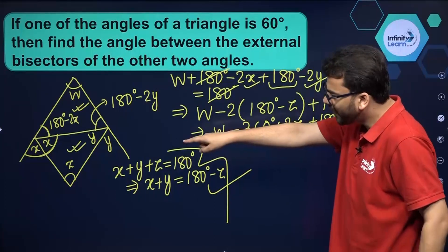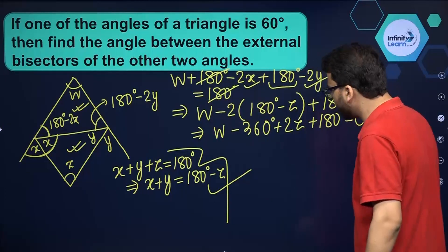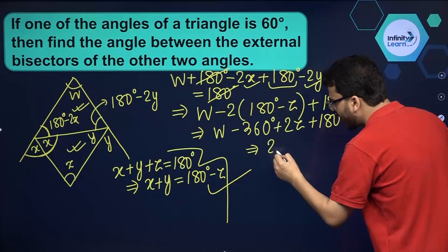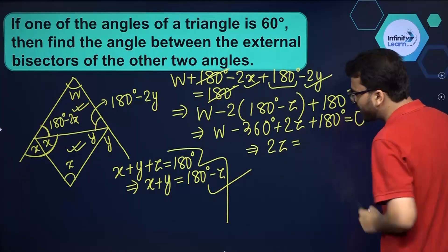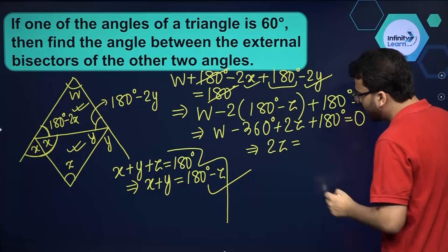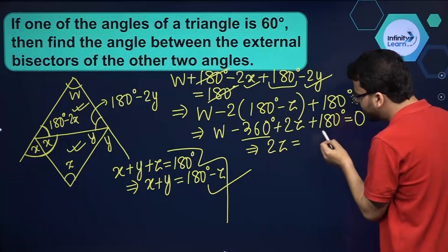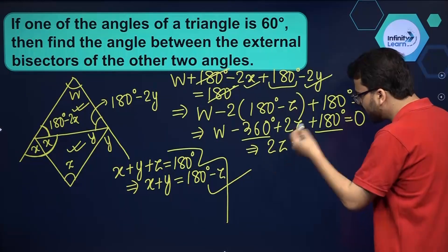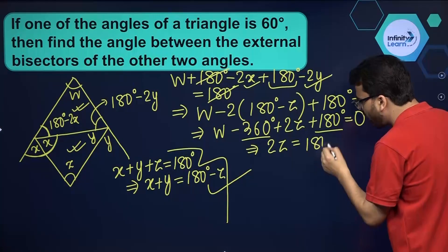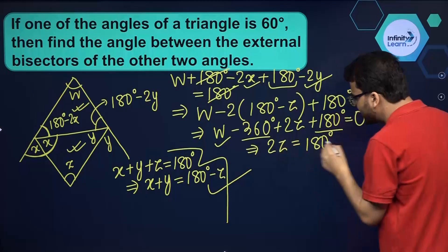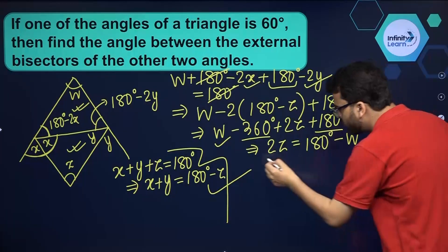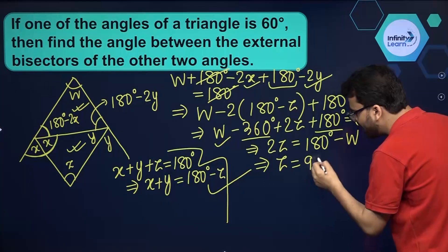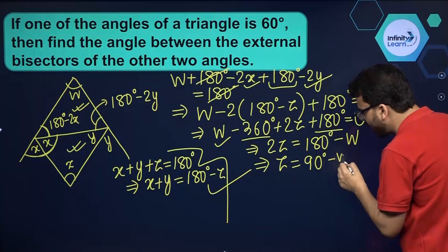Opening the brackets gives: w minus 360 plus 2z plus 180 equals 0. Rearranging, 2z equals 360 minus 180 minus w, which gives 2z equals 180 minus w. Dividing both sides by 2, we get z equals 90 minus w divided by 2.